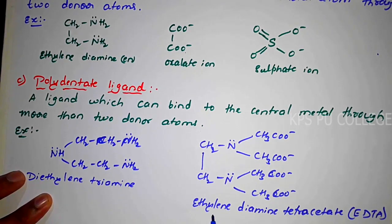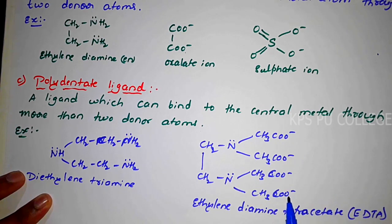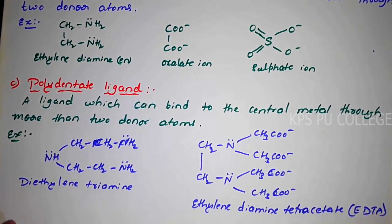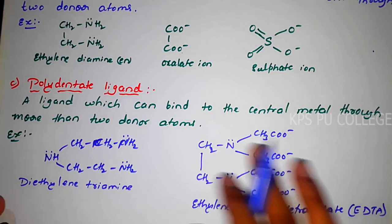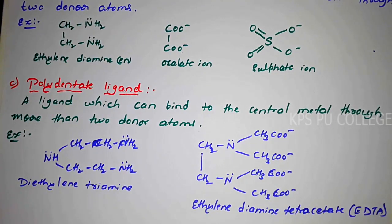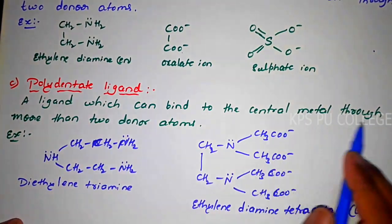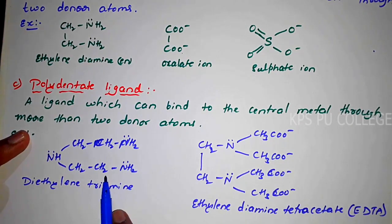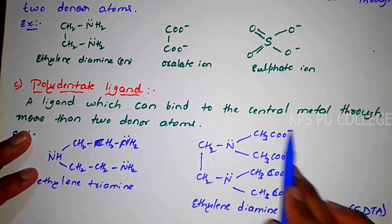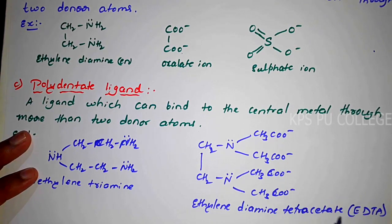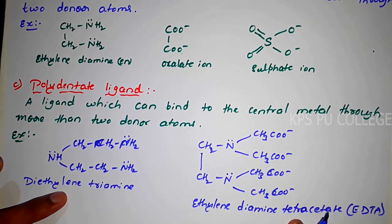Same as that, ethylene diamine tetra-acetate — EDTA — has nitrogen, nitrogen, and O-O-O-O totalling six donor atoms. There are six donor atoms here, so EDTA is a hexadentate ligand. Diethylene triamine and EDTA are the best examples for polydentate ligands — tridentate and hexadentate respectively.